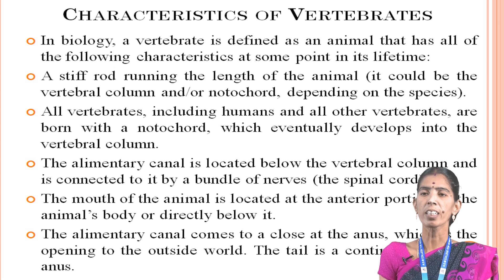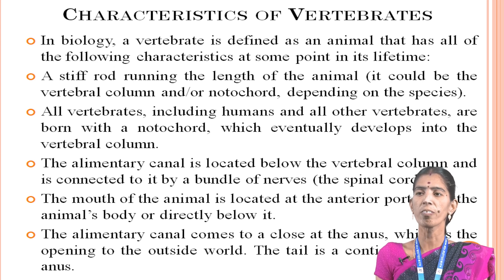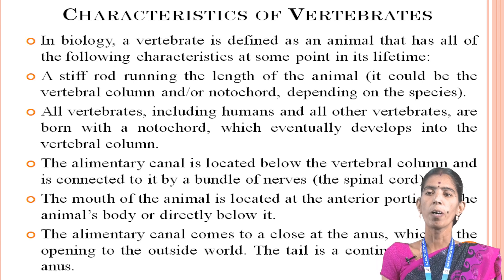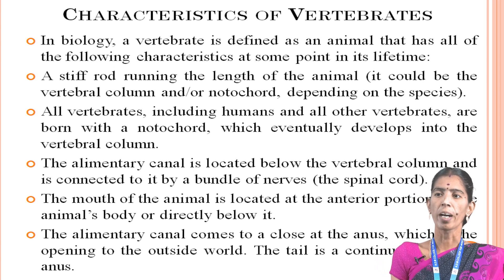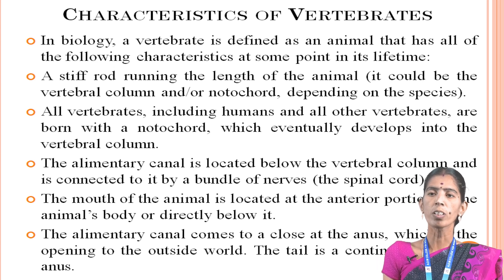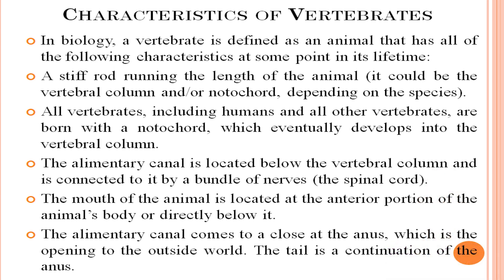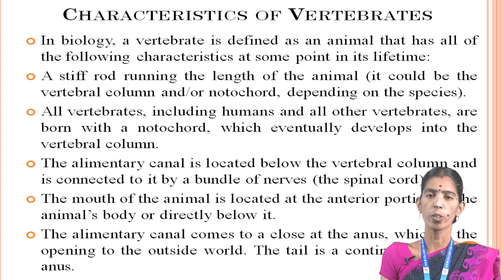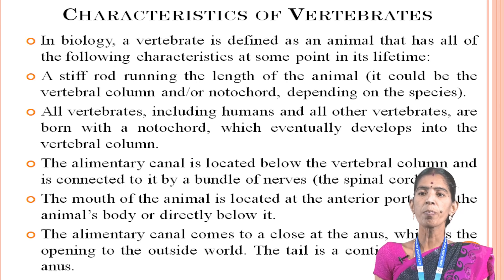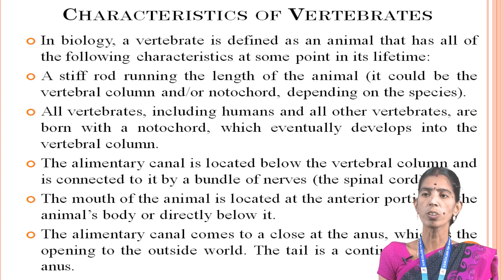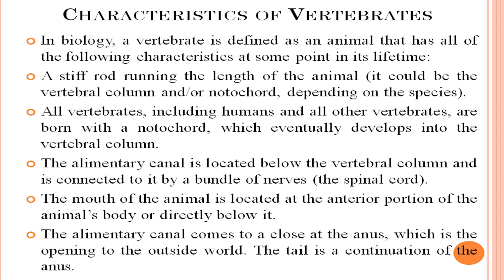The alimentary canal is located below the vertebral column and is connected to it by a bundle of nerves — the spinal cord. The mouth of the animal is located at the anterior portion of the animal's body or directed below it. The alimentary canal comes to a close at the anus, which is the opening to the outside world. The tail is a continuation of the anus.